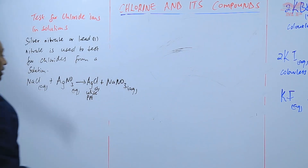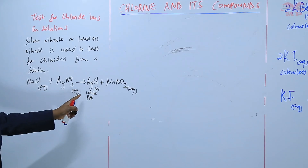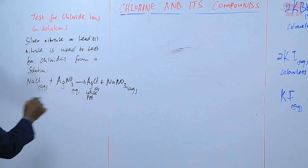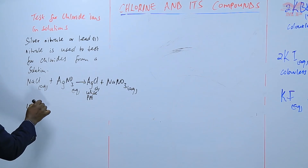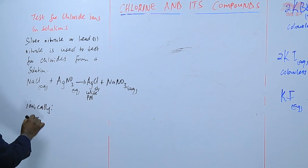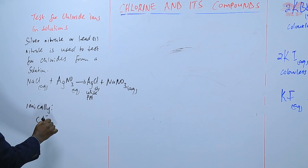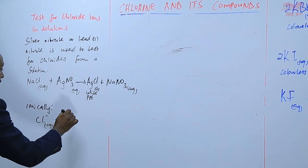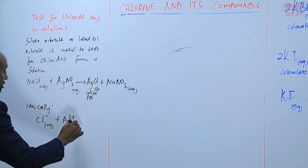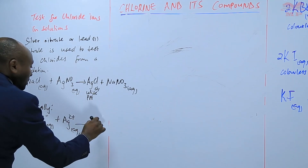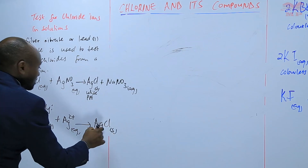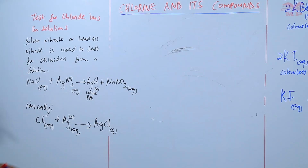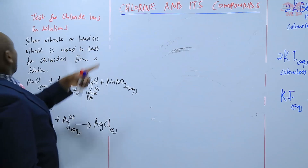The presence of the white precipitate indicates the presence of chloride ions. Ionically, what is happening is that the chloride ions in the sodium chloride are combining with the silver ions from the silver nitrate to form silver chloride, which is the white precipitate. Similarly, when lead(II) nitrate is used: